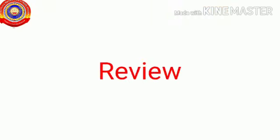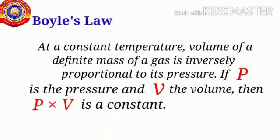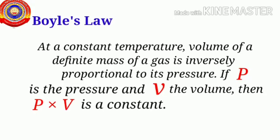So students, let's recall what we learned today. We learned one of the important gas laws — that is Boyle's law. According to this law, at a constant temperature, the volume of a definite mass of a gas is inversely proportional to its pressure. As the pressure increases, volume decreases and vice versa. Mathematically, this is expressed as P₁V₁ = P₂V₂, where PV is a constant.